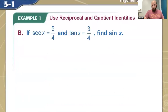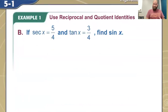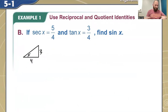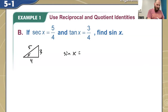We can also do this problem here, which we've done in the past, but we're going to do it a little bit differently. If the secant of x equals 5 over 4 and the tangent of x equals 3 over 4, find the sine of x. So in the past, what you would have done was you would have modeled this out as a triangle. Tangent is opposite over adjacent, and secant is hypotenuse over adjacent because it's the reciprocal of cosine. So that makes the hypotenuse 5. Normally you would say the sine of x is opposite over hypotenuse, which is 3 over 5.